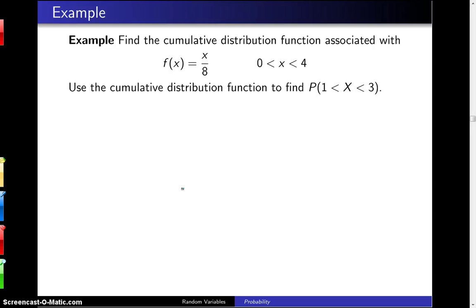Find the cumulative distribution function associated with the probability density function f of x equals x over 8 defined for x values between 0 and 4, and then use the cumulative distribution function to find the probability that the random variable x falls between 1 and 3.